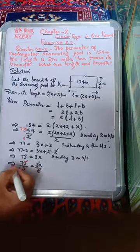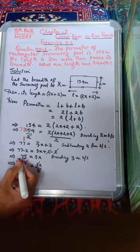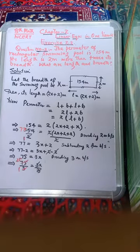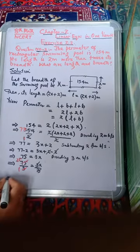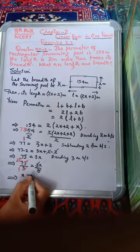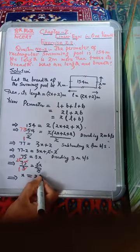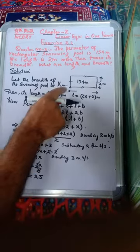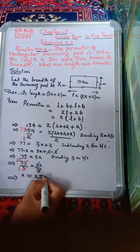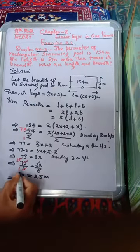So which means x is equal to 25. What is the unit? It is meters. So breadth is equal to 25 meters.